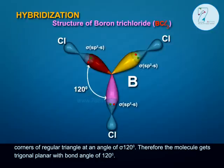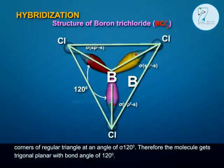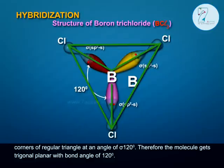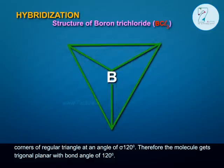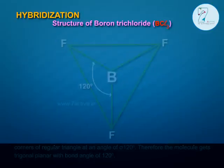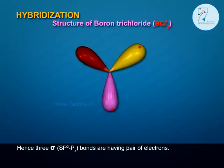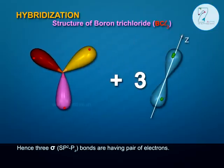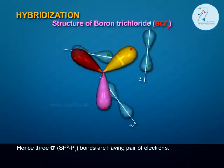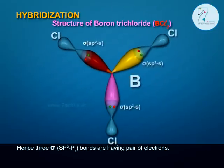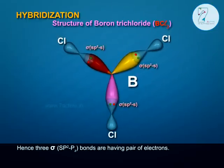Therefore, the BCl3 molecule is triangular planar with a bond angle of 120 degrees. Hence, three sigma SP2–Pz bonds are formed, each having a pair of electrons.